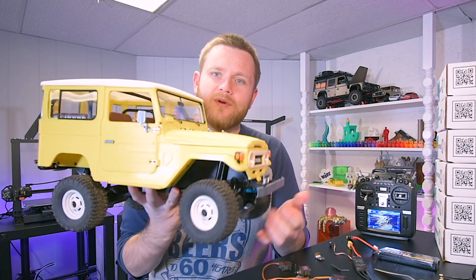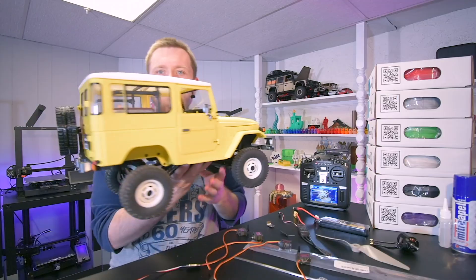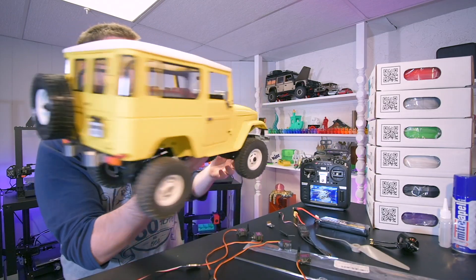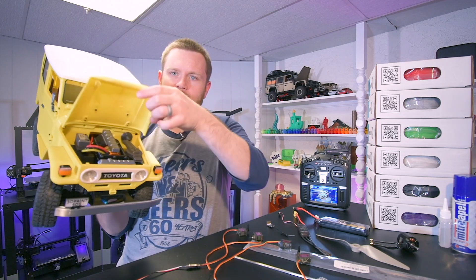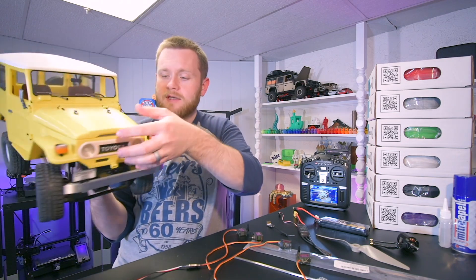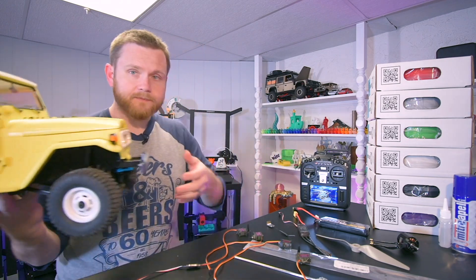So this is a fully 3D printed functioning RC car. It is a crawler of an FJ40 in this case called the Bamboo. It is full featured and everything on here except for the electronics is 3D printed. Let me put it away.